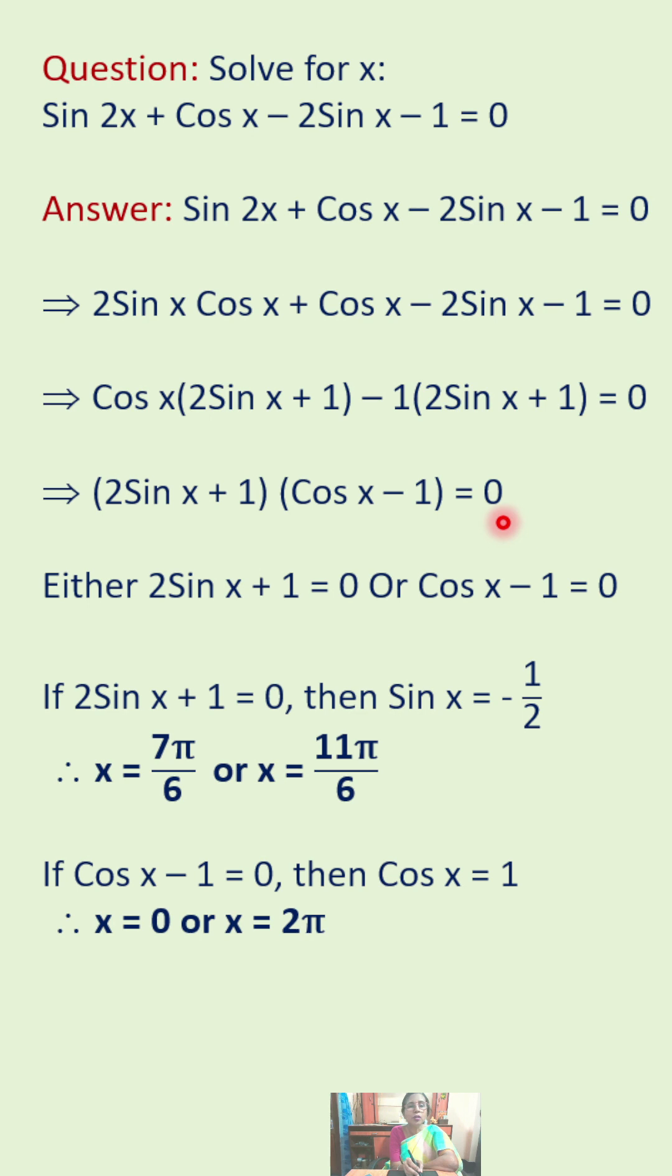That is 2 sin x plus 1 times cos x minus 1 equals 0. Therefore, either 2 sin x plus 1 equals 0 or cos x minus 1 equals 0.